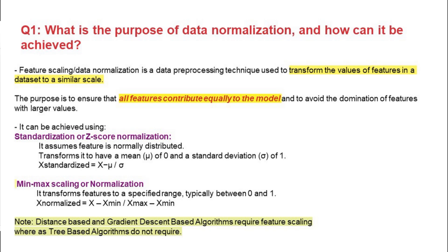Another technique is min-max scaling, also known as normalization. When the feature is not normally distributed, we go with min-max scaling, which brings the complete range within 0 and 1. Whenever we are dealing with a distance-based algorithm or gradient descent-based algorithm, we use data normalization, whereas tree-based algorithms do not require this.